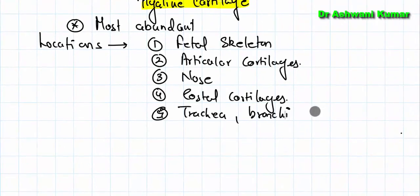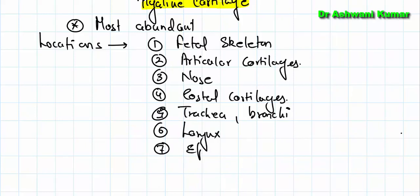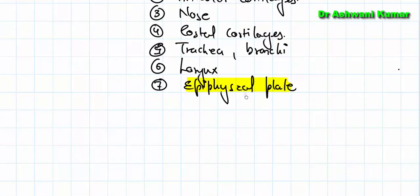Hyaline cartilage is also found in the trachea, bronchi, larynx, and in the epiphyseal plate — the growth plate of young bone. Like any cartilage, it has three components: fibers, ground substance, and cells. Let us start with the fibers of hyaline cartilage first.